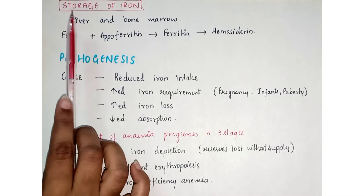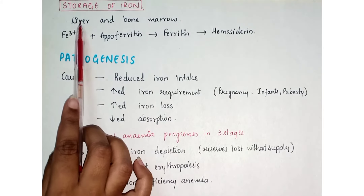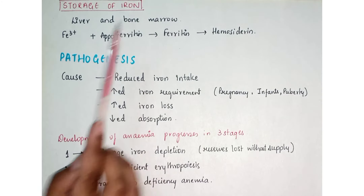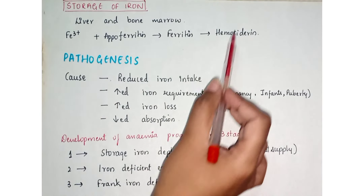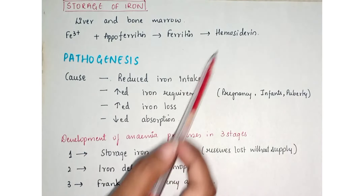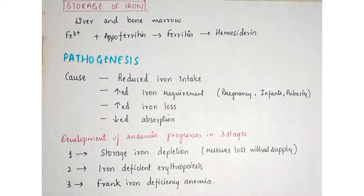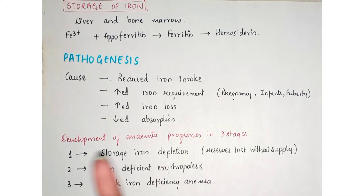Iron is mainly stored in the liver and bone marrow. Fe3+ attaches to apoferritin to form ferritin, which is stored in the form of ferritin and hemosiderin in the liver and bone marrow. If there is any problem with absorption, transport, or storage of iron, it leads to anemia.